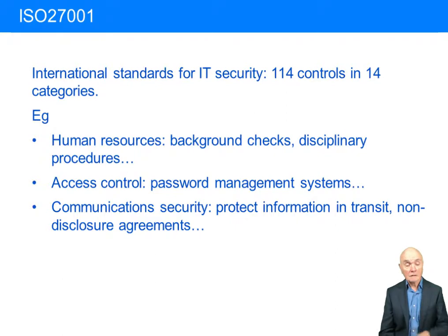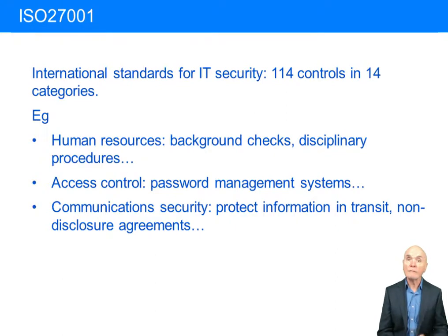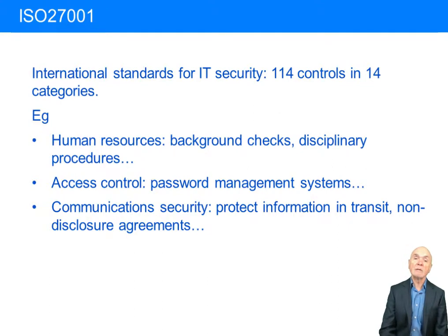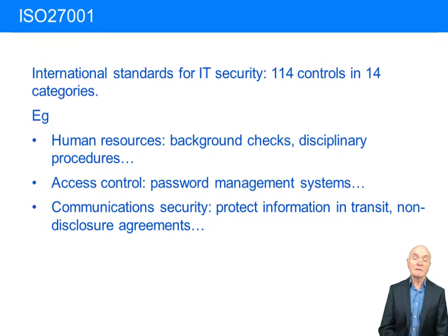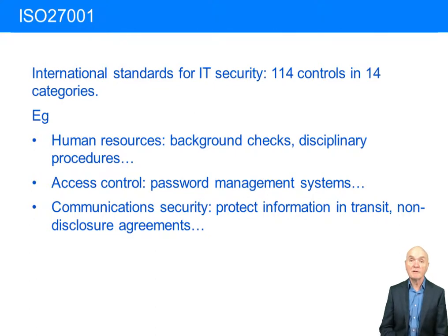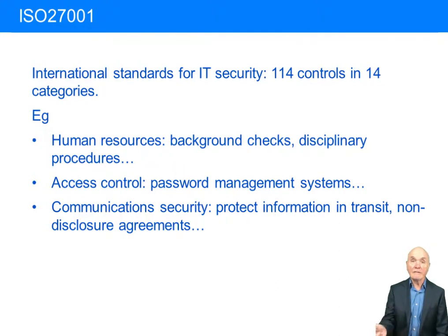Disciplinary procedures: if you've told somebody they mustn't download from the internet and they do, maybe the way to stop that is to give them a warning; in extreme circumstances, to sack them. Access control — password management systems are systems which say, after three months your password is now out of date, you have to choose another one, and it stops you choosing an old one from two times ago.